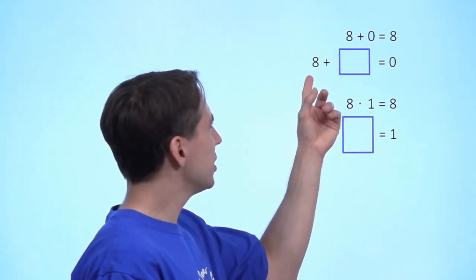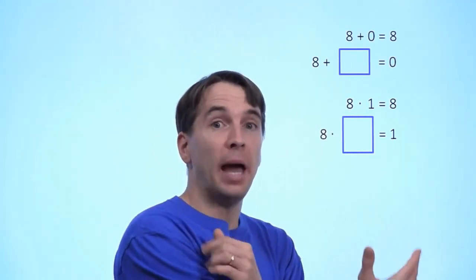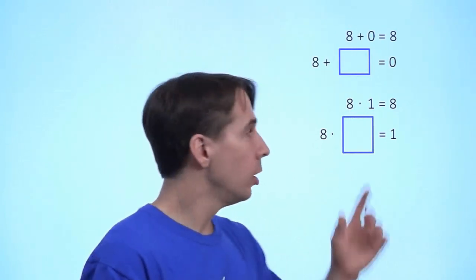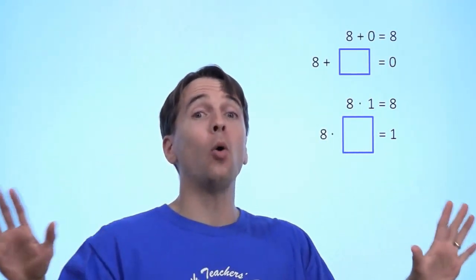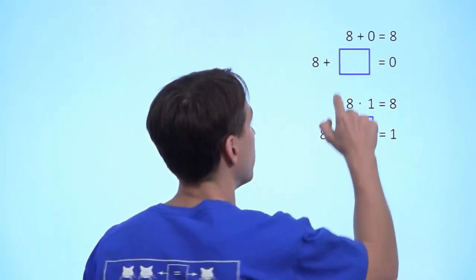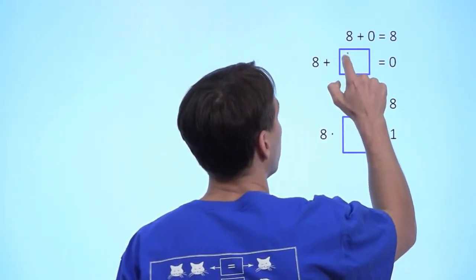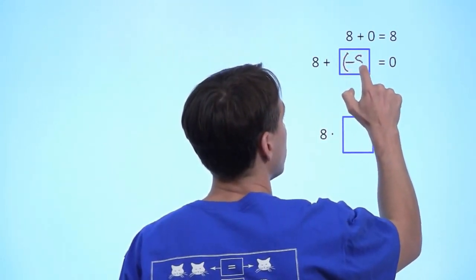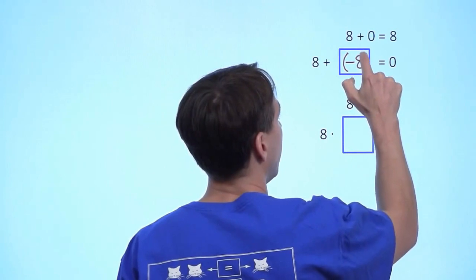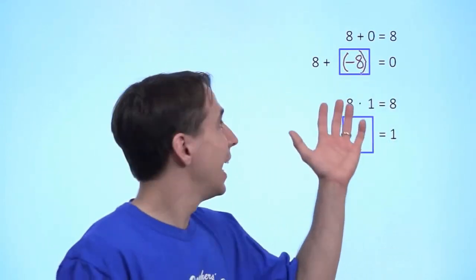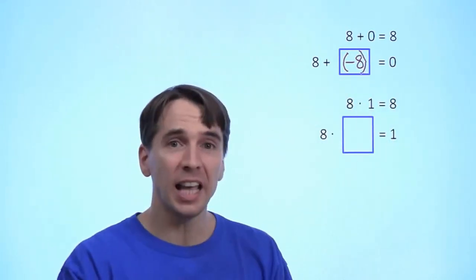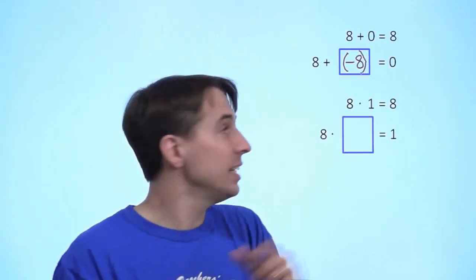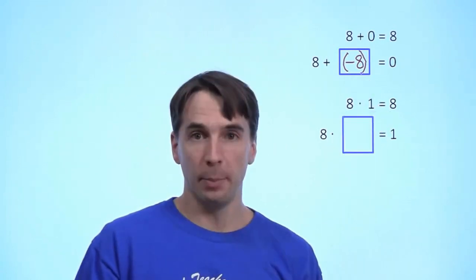Now, then we come to this question: what do I add to 8 in order to get back to the identity, in order to get to 0? Well, to answer that question, we made up a whole new kind of number. We made up negative numbers. And we put the negation of 8 — negative 8 — right in here, and we define that as the number that we have to add to 8 in order to get back to 0.